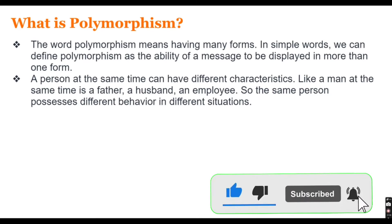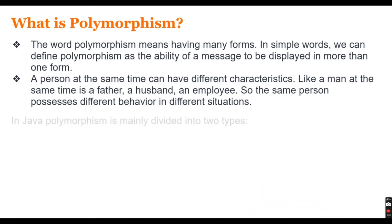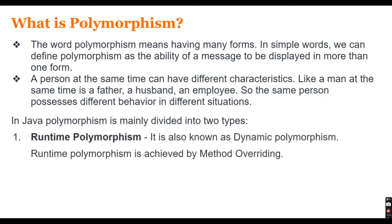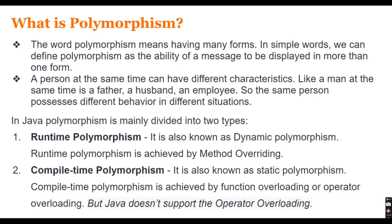In Java, how do we achieve polymorphism? Polymorphism in Java is mainly divided into two types. The first is runtime polymorphism and the second is compile-time polymorphism. Runtime polymorphism is also known as dynamic polymorphism, and it is achieved by method overriding — that is the important term here.